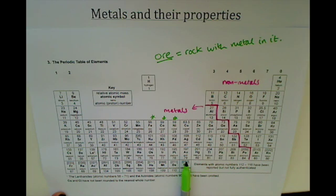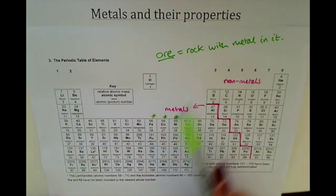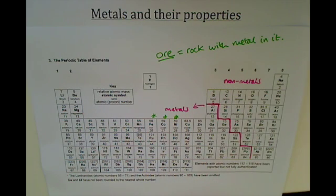Whereas some, like gold as we discussed, are unreactive, so they would just be found in their pure form. These ones that are found as an ore, trapped inside a rock, we have to spend quite a lot of money to extract those metals.